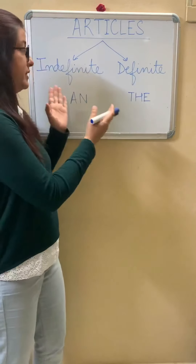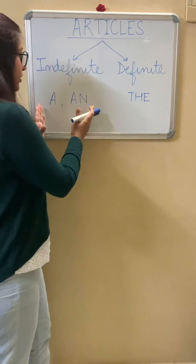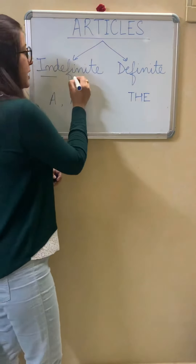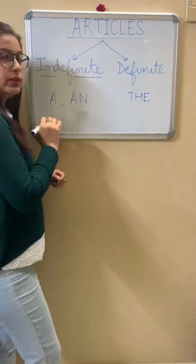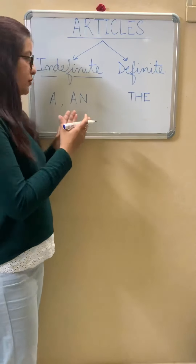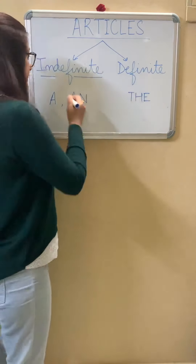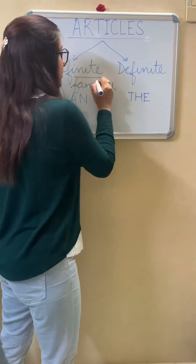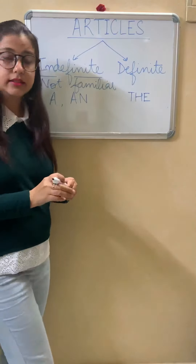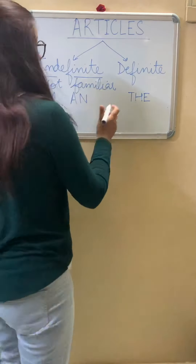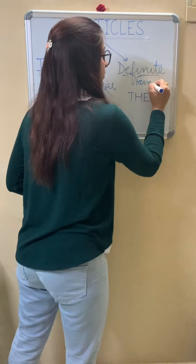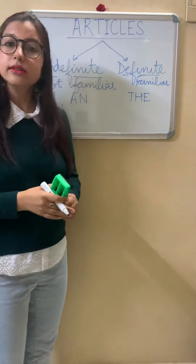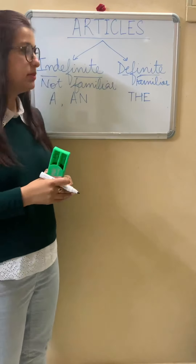Now what is the difference in usage? Today we learn the usage of a and an. Indefinite article is used when the object or the noun is not familiar to us. While definite article is used when the noun is familiar, or we are using the noun for the second time so that it becomes familiar.